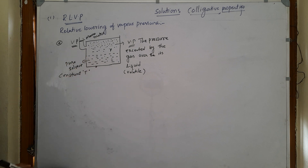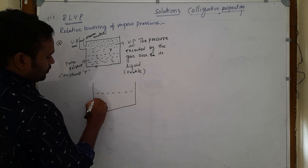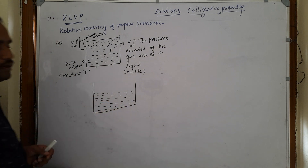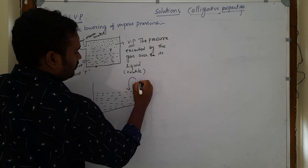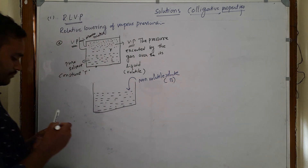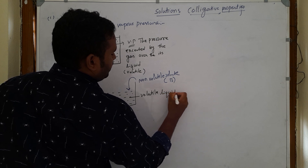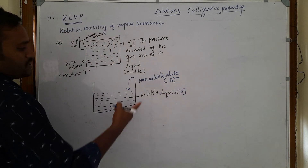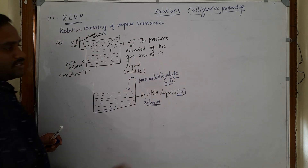If you add a non-volatile solute to this solvent — like sugar, urea, glucose, fructose, or sodium chloride — all these are non-volatile solids, meaning they cannot evaporate very easily. The non-volatile solute is considered as B, and the volatile liquid solvent is considered as A.